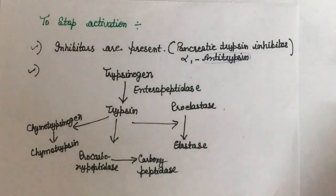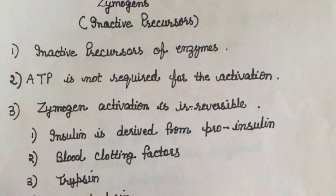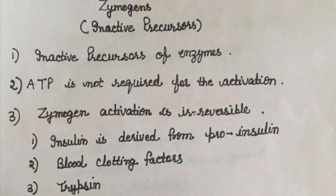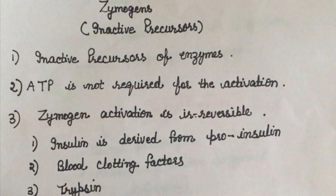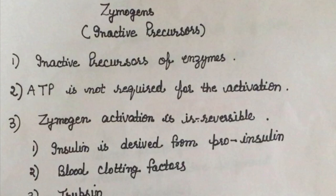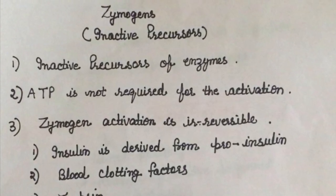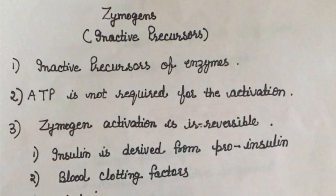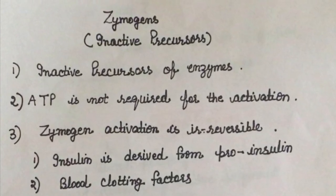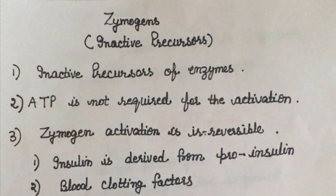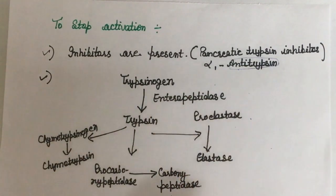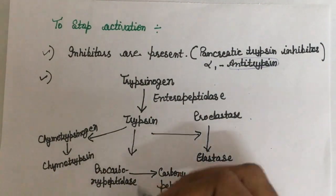In summary, zymogens are digestive enzymes produced in their inactive form to avoid tissue necrosis. Because they are produced by the pancreas, if they were produced in their active form they would digest the pancreas itself. To avoid this tissue necrosis, they are produced in their inactive form. That is all about zymogens — I hope you have understood all the key points.